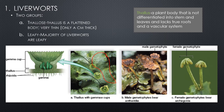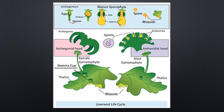Liverworts can reproduce sexually or asexually. They have what's called a gemma cup for asexual reproduction. They also have male and female gametophytes for sexual reproduction. Looking at their life cycle: the thallus is the main body, rhizoids anchor them to the ground, and gemma cups allow asexual reproduction. For sexual reproduction, a female gametophyte and male gametophyte are produced.